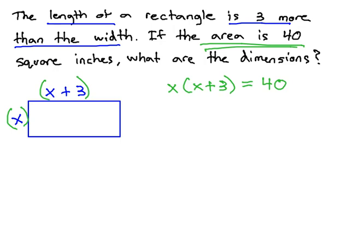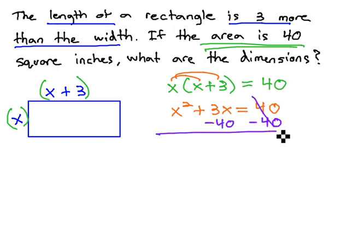We now have an equation we can solve to answer the question. Start by distributing to give us x squared plus three x equals forty, and before we can solve, the equation has to equal zero. So, we'll subtract forty from both sides, giving us x squared plus three x minus forty equals zero.